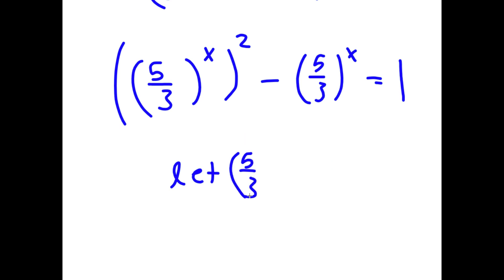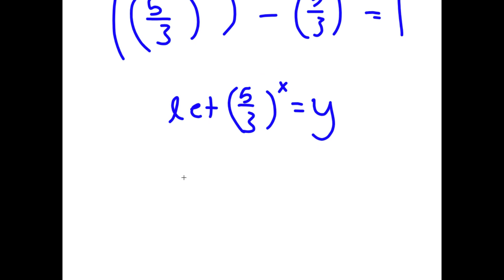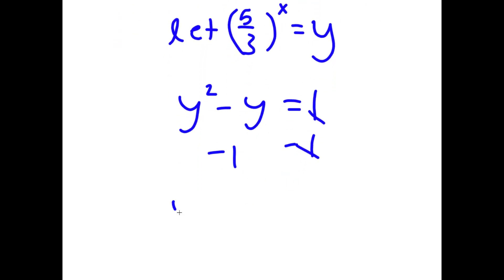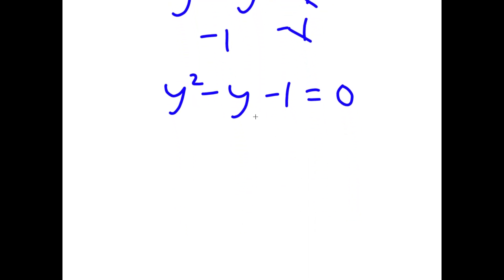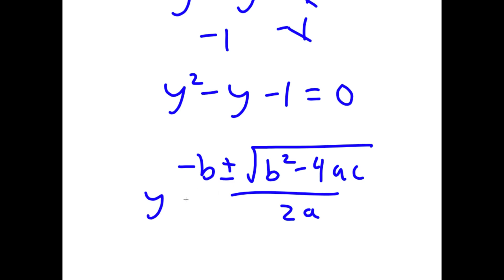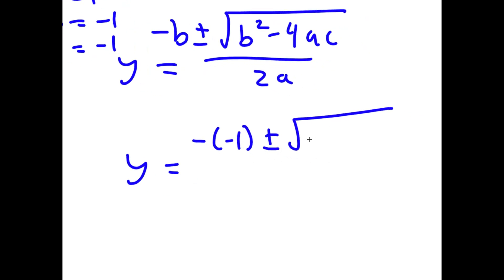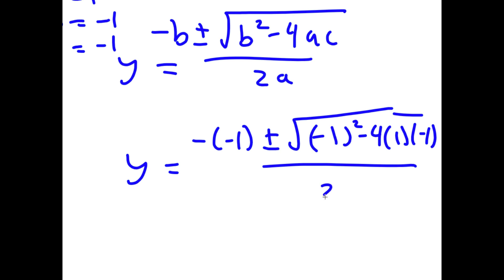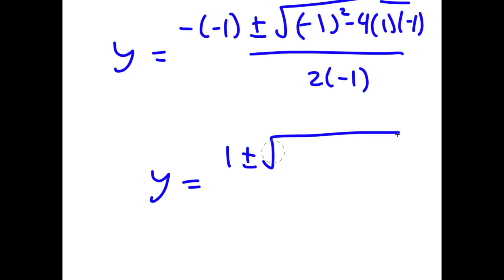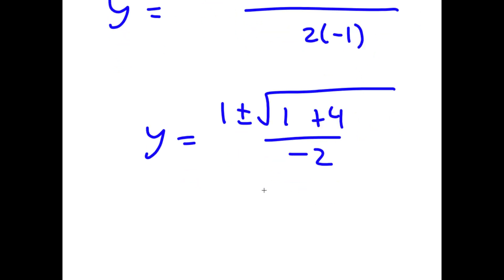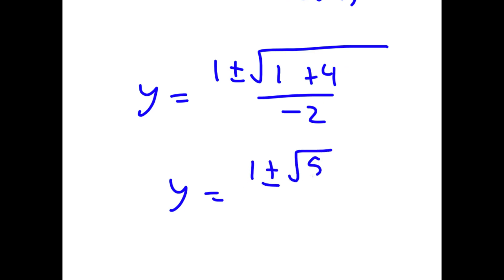I let y equal (5/3) to the power of x, so now I have y squared minus y equals 1. Subtracting 1 from both sides gives y squared minus y minus 1 equals 0. Using the quadratic formula with a = 1, b = negative 1, c = negative 1, I get y equals (1 plus or minus the square root of 5) over 2.